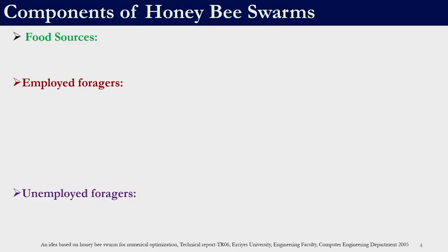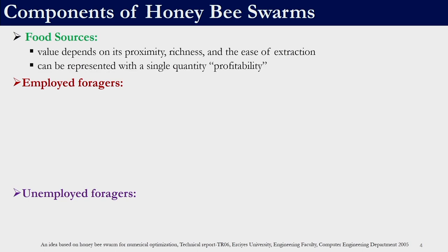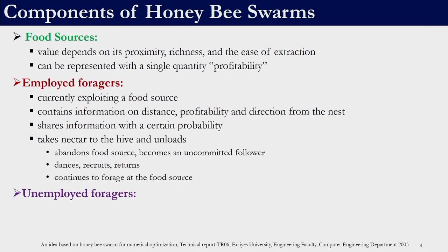Before we move on to the algorithm, we need to understand the components of honey bee swarms. There are three major components: one is the food source, the employed bees, and the unemployed bees. A food source's value depends on its proximity, richness, and ease of extraction, and can be represented with a single quantity known as profitability — similar to the objective function value in optimization. Employed bees are currently associated with a food source; they are exploiting it and contain information on distance, profitability, and direction from the nest. These employed bees share information with a certain probability to other bees.